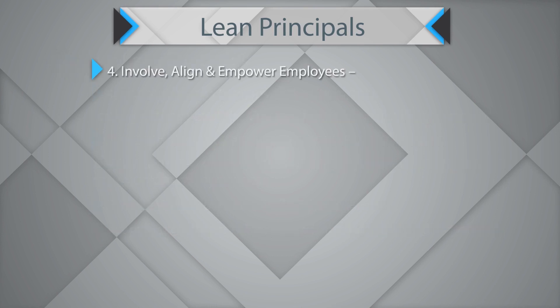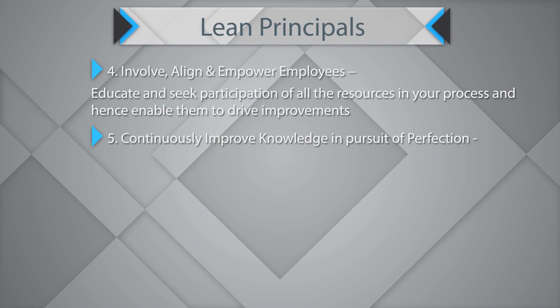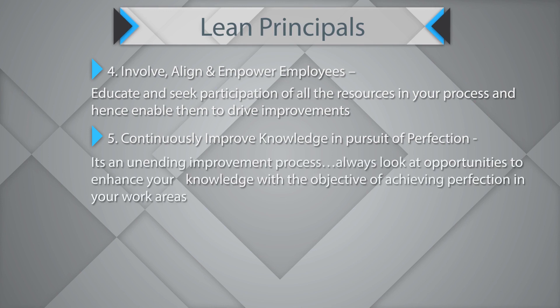The fourth, and very important, principle is to involve, align and empower employees. Employees are the closest touch points to our customers, so you must look at educating them, seeking their participation in the process, and enabling them to drive improvements. The fifth principle is to continuously improve knowledge in our pursuit of perfection. It is an unending improvement process — always look at opportunities to enhance your knowledge with the objective of achieving perfection in your work areas.